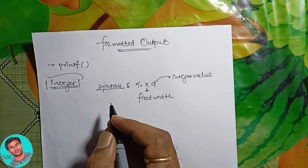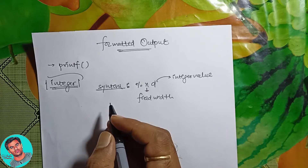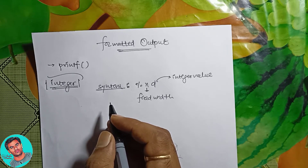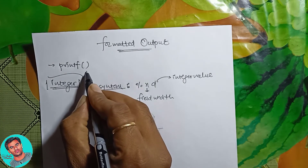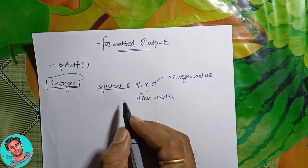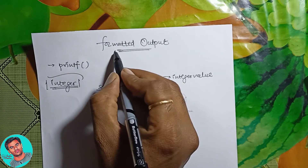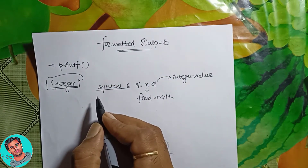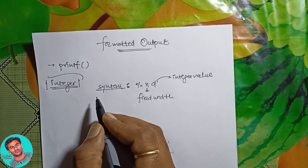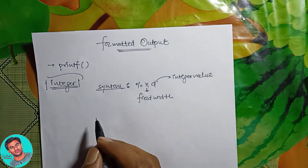In today's lecture, we are going to discuss about formatted output. This formatted output, as the name indicates, is related to an output function, which is a printf statement. A printf statement provides an output that is easy to understand by the user, and that is called formatted output.